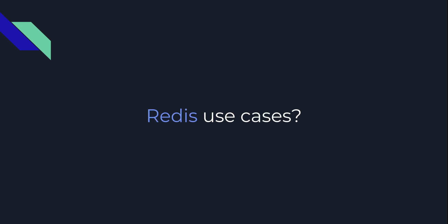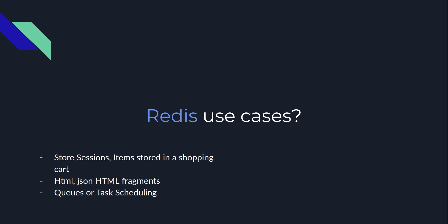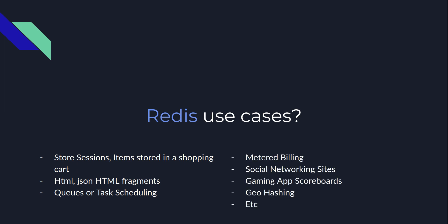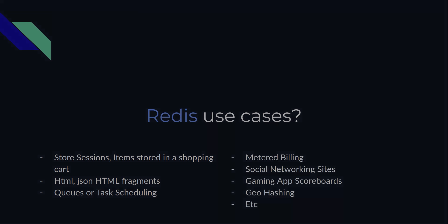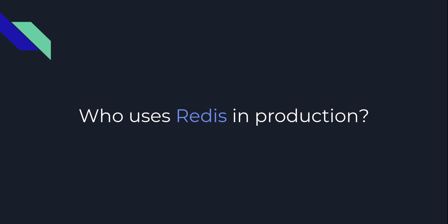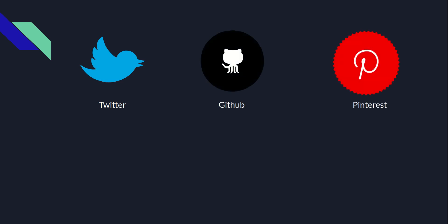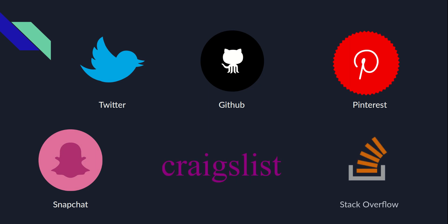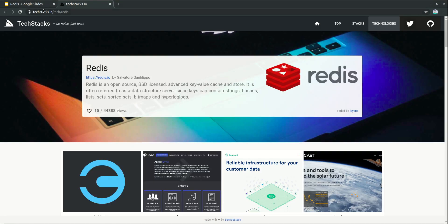Redis can be used for a variety of things including application configurations, session store, items stored in a shopping cart, HTML fragments or JSON fragments, queues or task scheduling, metric billing, social networking, gaming, and geo hashing, etc. It could be a really good question to ask who is using Redis in production. Many tech giants and well-known companies are using Redis in their production. Twitter, for example, is using more than 10,000 instances in one of their most important services, which is the timeline. We also have GitHub, Pinterest, Snapchat, Craigslist, and Stack Overflow, and many many others. You can check the full list at techstacks.io.